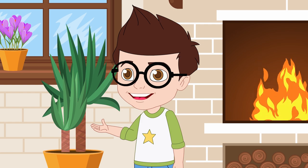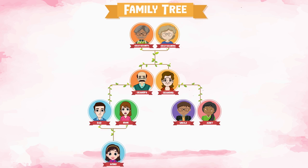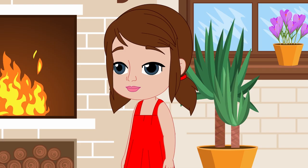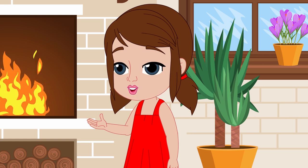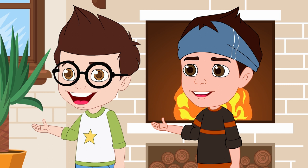Aishu, can you please explain again? Yes, Nani. In my family, we have great-grandparents. Their children are my grandparents. My grandparents have two children — a son and a daughter. My dad is their son, and their daughter is my aunt. My aunt is my dad's only sister. I am the only child of my parents. My aunt has two children — a daughter and a son. Sounds interesting. I will also make my family tree. I think we all should make one. Our family is the best gift we have, and knowing about our family roots is very important.